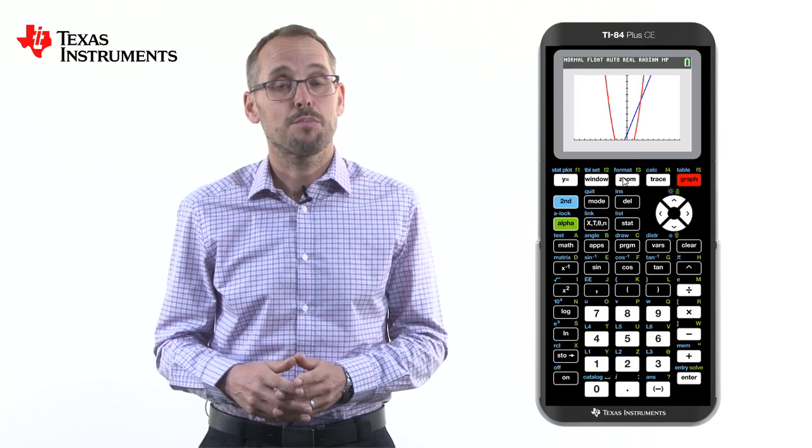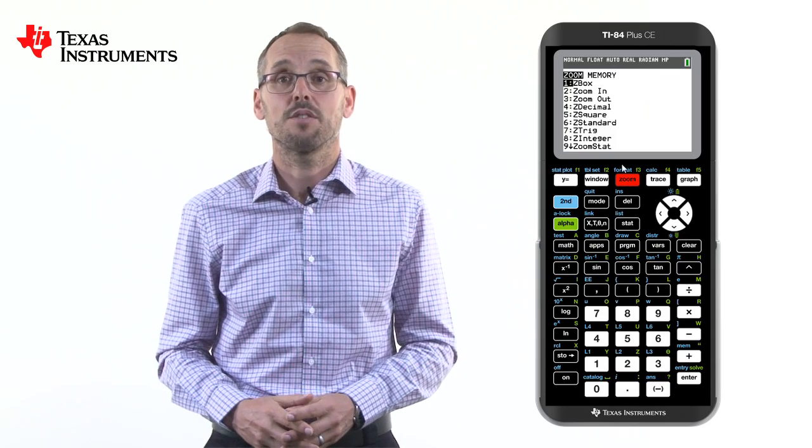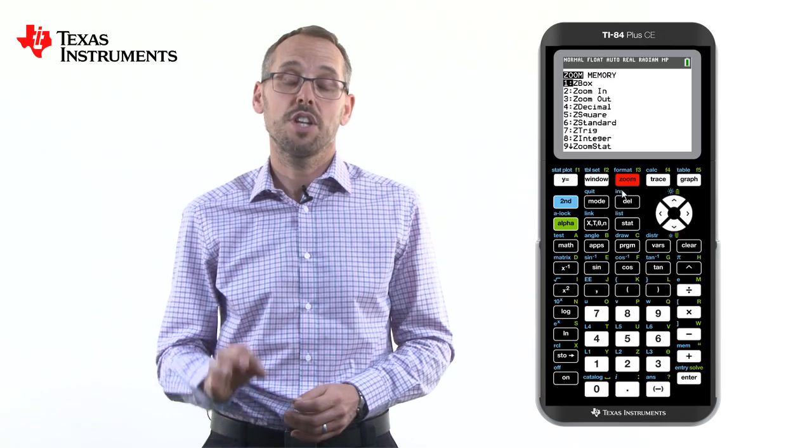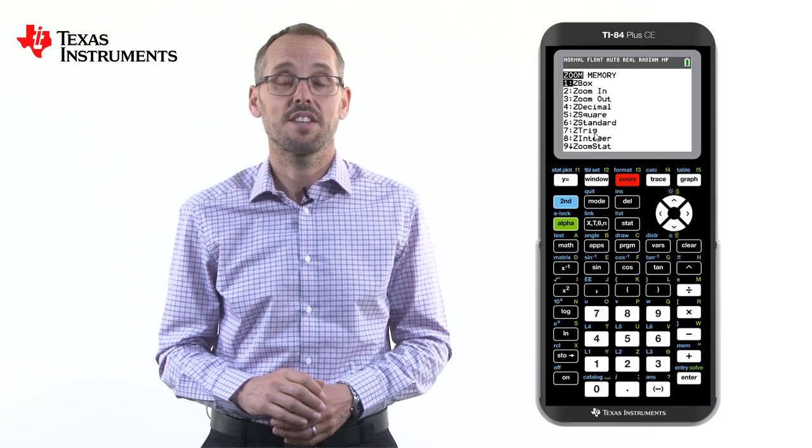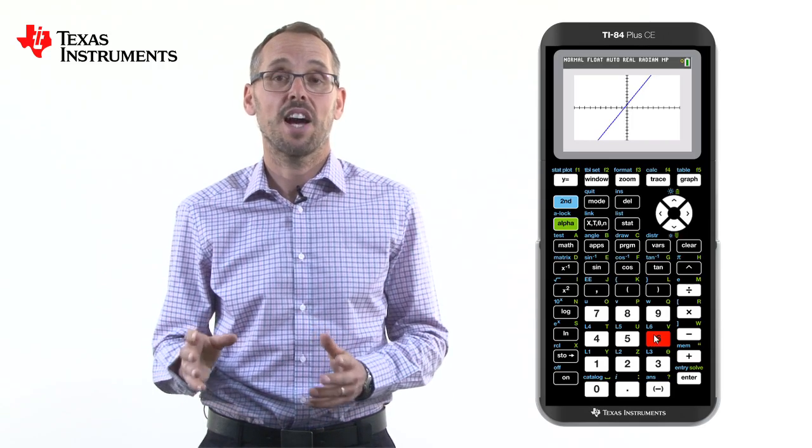The other option is to press the zoom key. This is also located on the top of the handheld. If we press zoom, you can notice that number six is zoom standard. That puts it back to the minus ten to ten axes that we had originally.